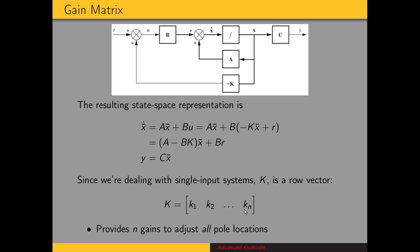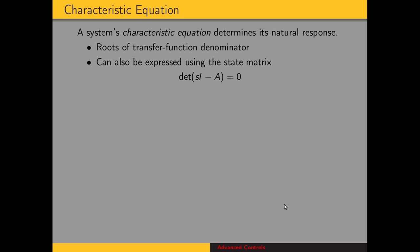This is different from a PID controller, where we have only three parameters to adjust, so we can't place all the poles with a PID controller. Now, talking about placing the poles brings us to the characteristic equation. A system's characteristic equation determines its natural response — the roots of the transfer function denominator solve the characteristic equation. We can also express the characteristic equation using the state matrix: the determinant of (sI - A) = 0.